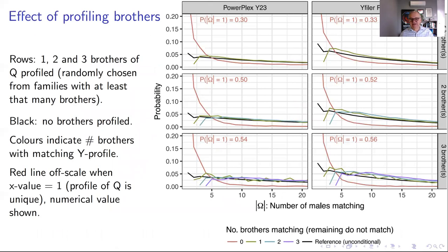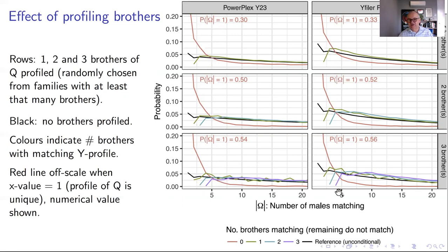This next plot is a little more dense. We're imagining a number of brothers being profiled — zero, one, two, or three brothers — whose Y chromosome profiles are also available to the investigation alongside the profile of the alleged contributor Q. The black line is the reference case with no relative information, showing a probability distribution for the number of matching males up to 20. The two columns correspond to the two different profiling kits being presented.